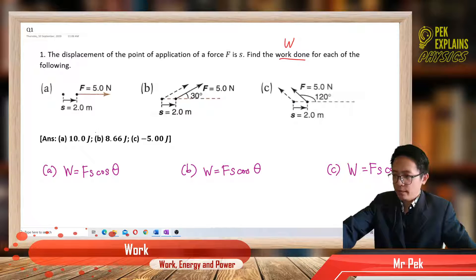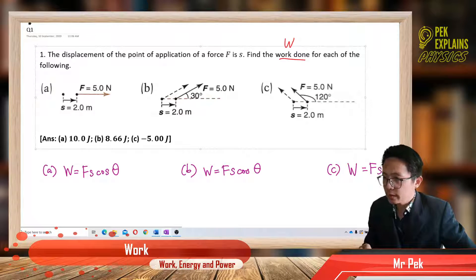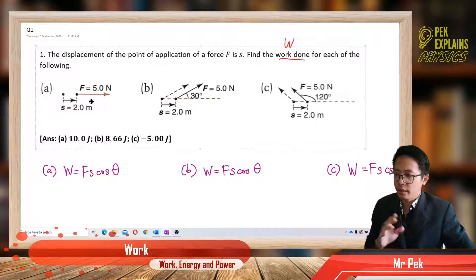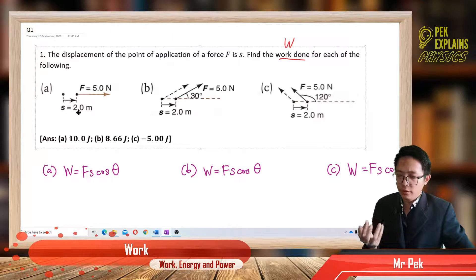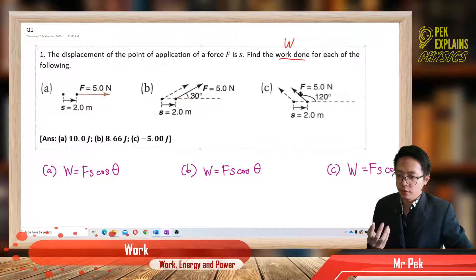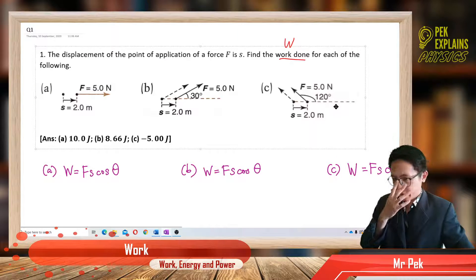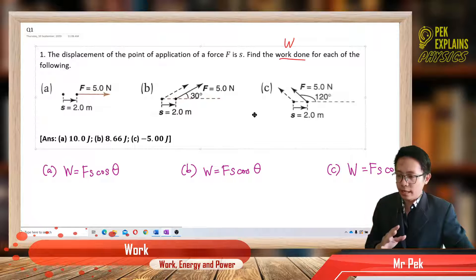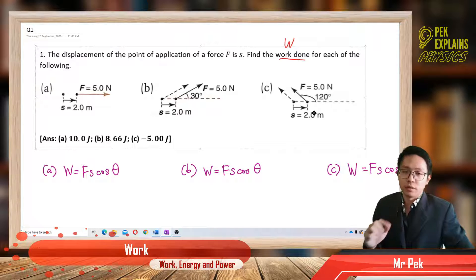We have three situations here, A, B and C. All of them have the same force, 5 Newton, and also same displacement, 2 meter. The only difference is the angle between the force and displacement. The first one is 0 degree, the second one is 30 degree, and the third one is 120 degree.